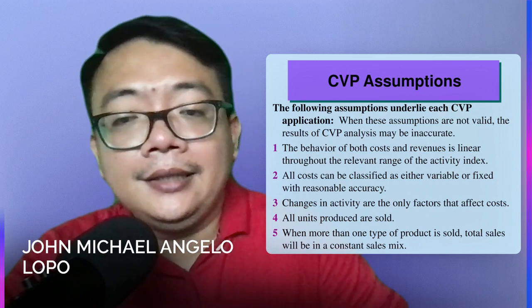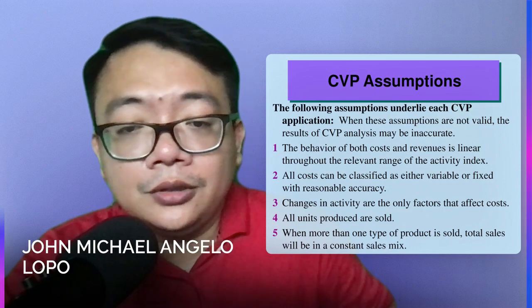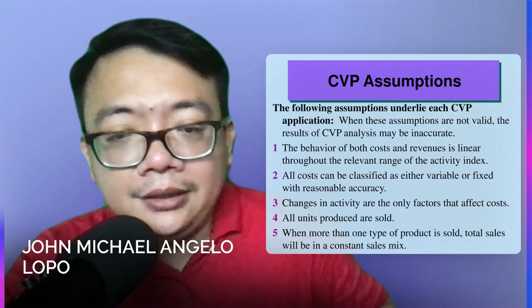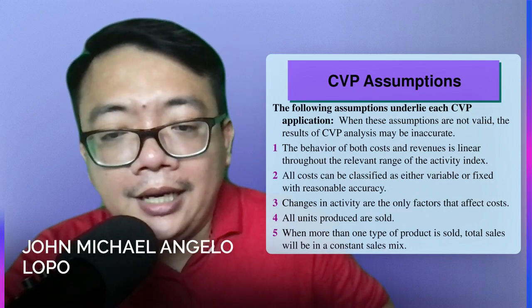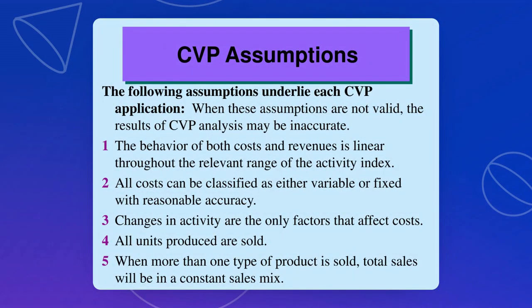Number four, all units produced are sold — meaning everything we produce must be sold. And the last one is, when more than one type of product is sold, total sales will be a constant sales mix. We will discuss more about sales mix soon.